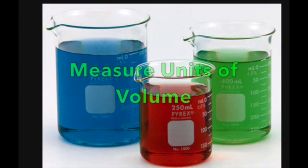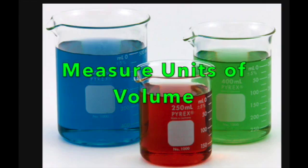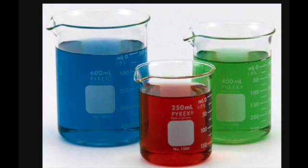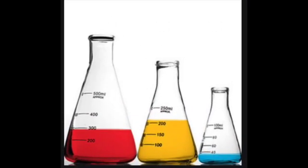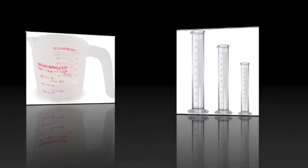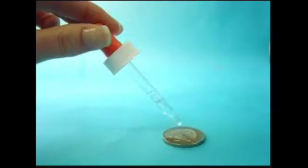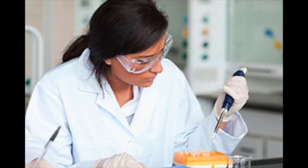Scientists also use science tools to measure units of volume. Volume is the amount of space a solid, liquid, or gas takes up. Scientists use beakers, measuring cups, graduated cylinders, and droppers to measure volume. They also use a tool called a pipette — it's like a dropper but more exact, used to add or remove very small amounts of liquid.